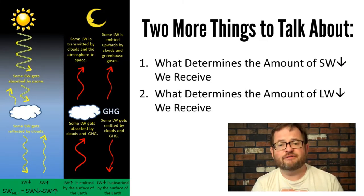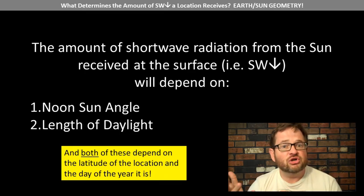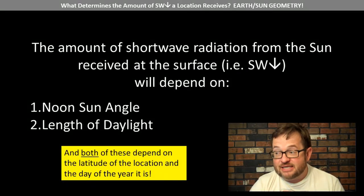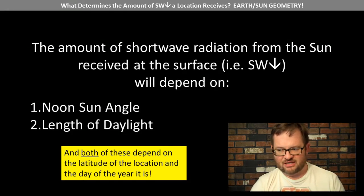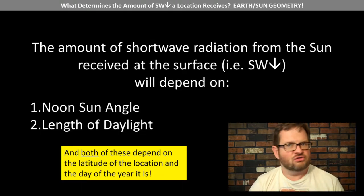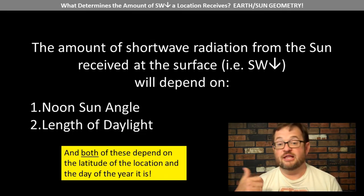What determines the amount of shortwave radiation that reaches the Earth? Fundamentally, it depends on two properties: something we're going to call the noon sun angle — a measure of how high in the sky the sun gets on any given day and at any given location — and the length of daylight, how long the sun is actually up. My six-year-old son always wants to know why it's hot in summer or cold in winter. Most of the time, the answer is that it's about how long the sun is up: the longer the sun is up, the more the ground heats up. Both length of daylight and noon sun angle are fundamentally about the latitude of the location and what day of the year it is.